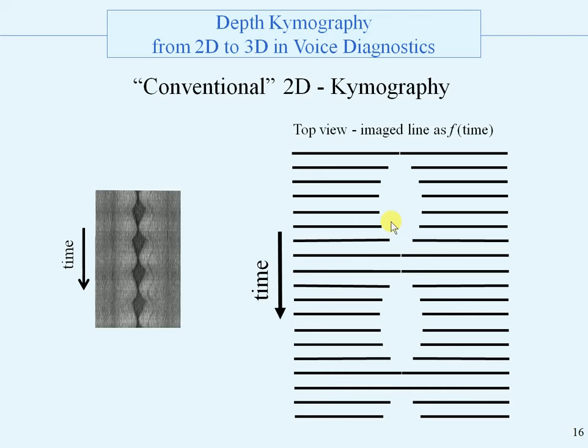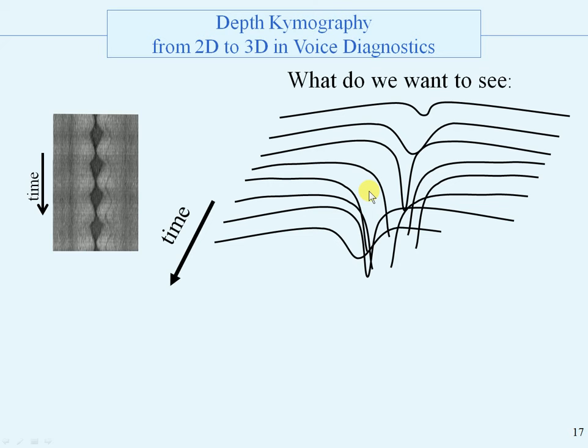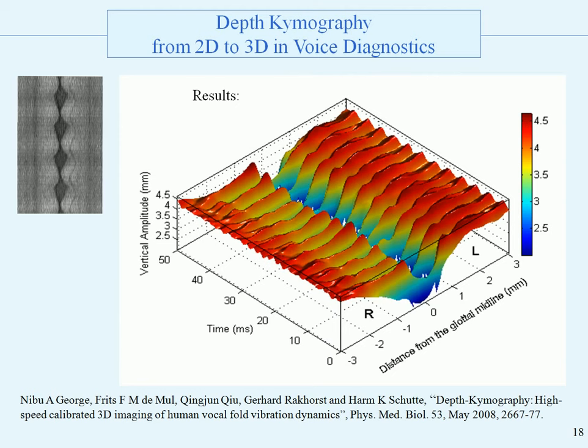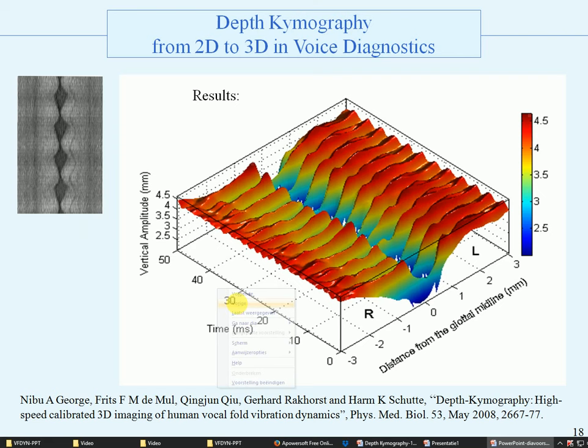What do we want to see? We want to see the top view but with extra information about the vertical position. That looks like this: the 2D kymography line with an extra vertical profile, and that vertical profile originates from the vertical position of the vocal folds. This is the result, in which here is the glottal midline, the time axis, and the amplitude, described in this article.